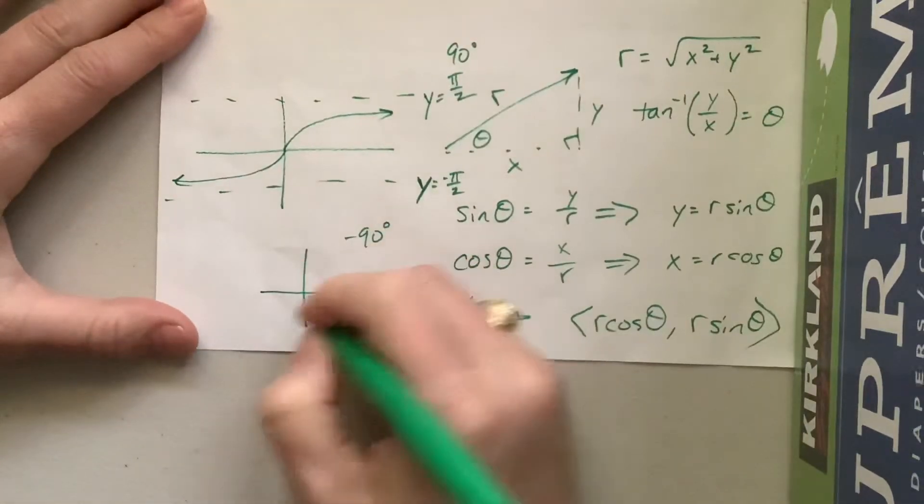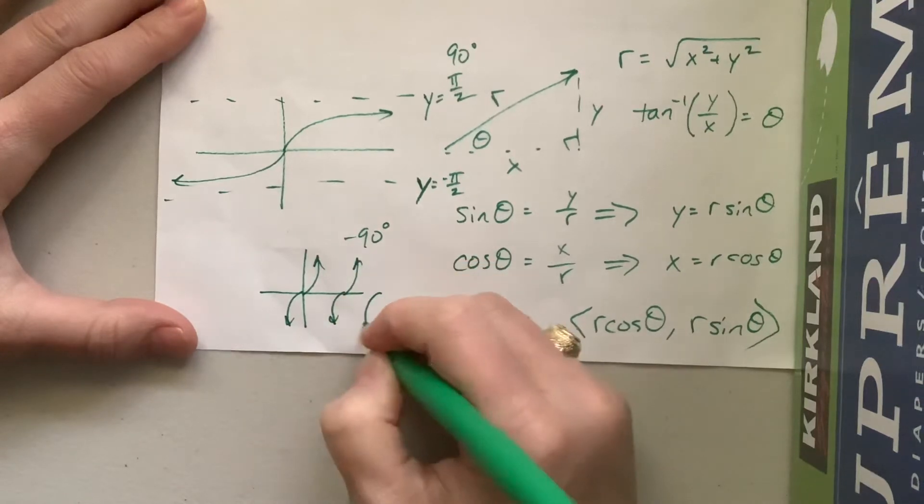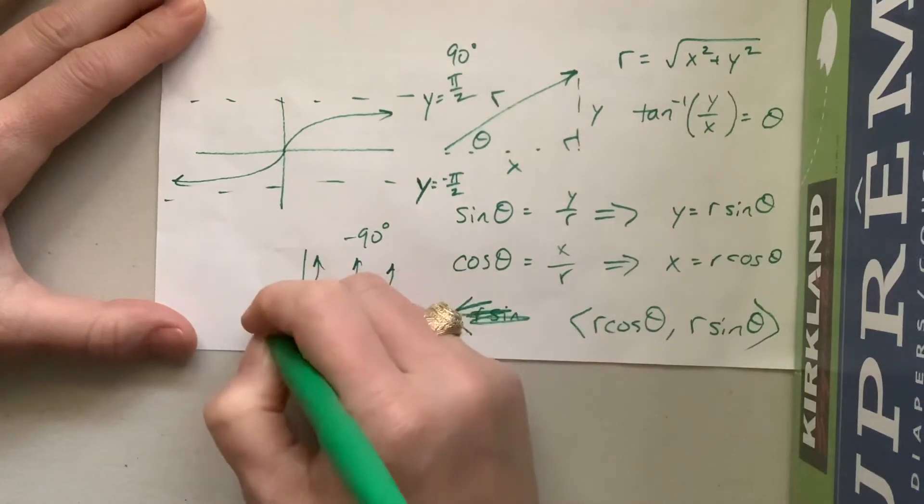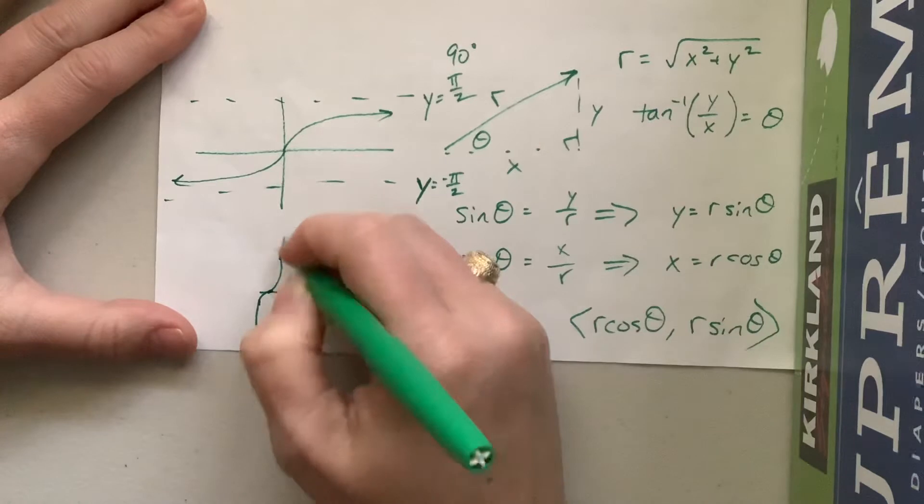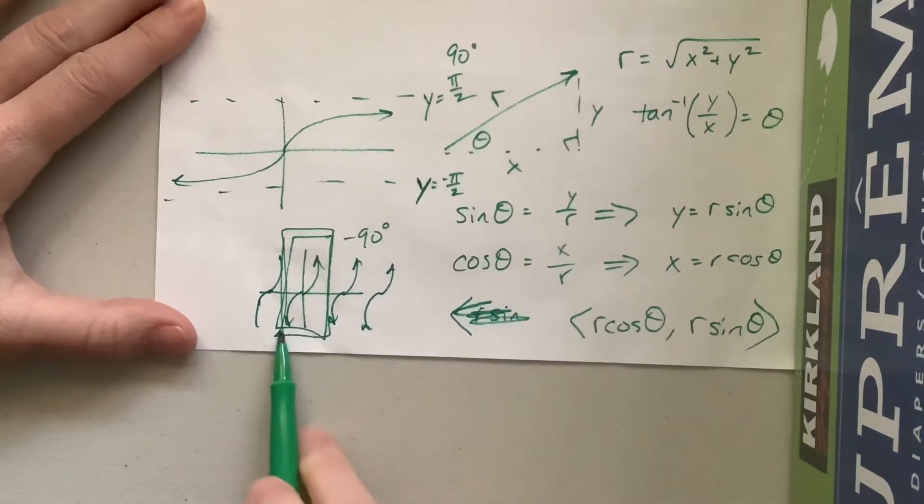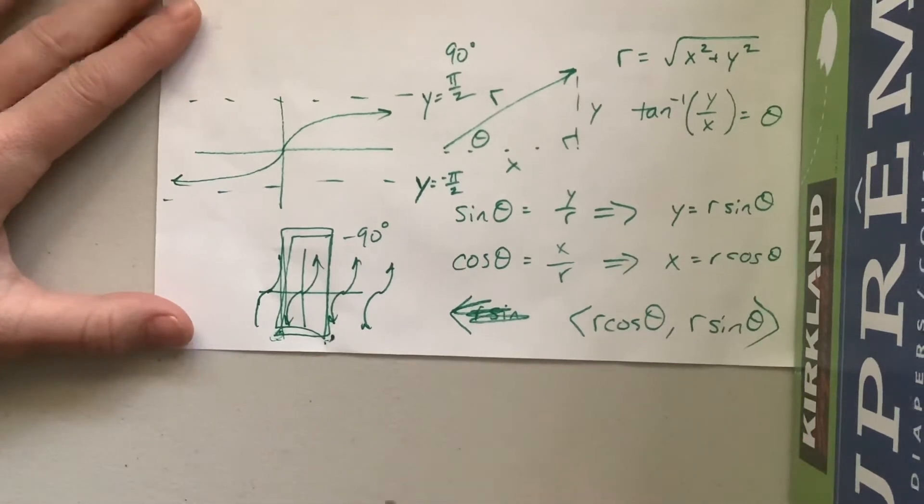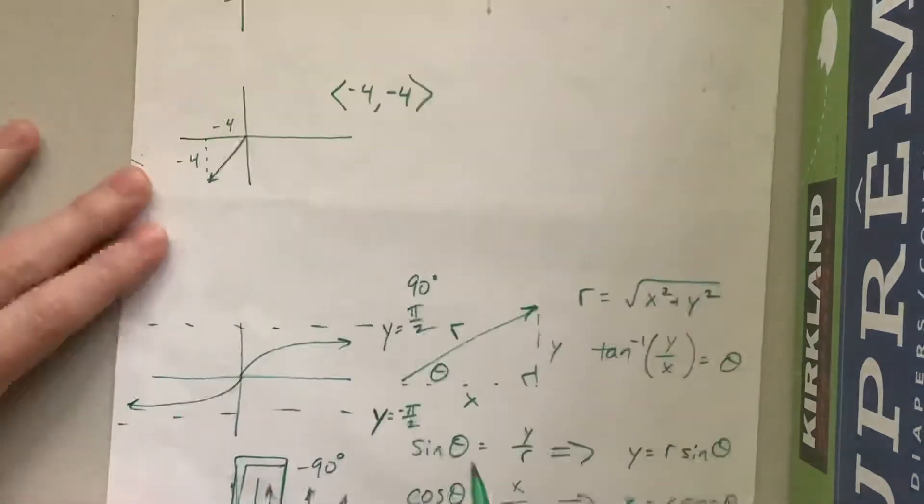So if you think about it, I took my tangent graph that does this forever, okay? And I just want this one little piece of it, okay? So that's going from negative pi over 2 to pi over 2, or from negative 90 degrees to positive 90 degrees. So my calculator, no matter what I do in my calculator, if I take the inverse tangent, I'm only going to get a value between negative 90 and positive 90.